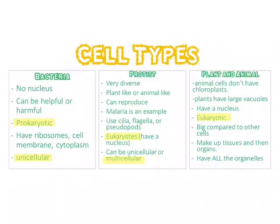Today, we're going to talk about plant and animal cells. They are eukaryotic, so they have a nucleus. You can remember this because you are eukaryotic — your cells have a nucleus. They're large compared to bacteria, and they have all the organelles.